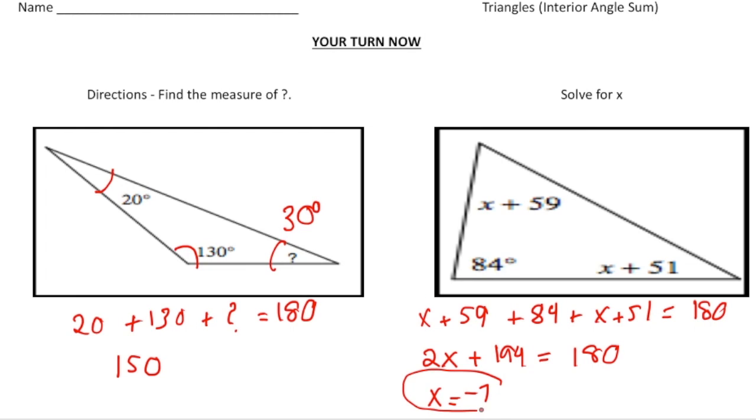Now to figure out the angle measures, let me plug in negative 7 for x. So negative 7 plus 59 gives us 52. And then negative 7 plus 51 gives us 44. And once again, if I add up 44, 84, and 52, we get a sum of 180 degrees. And again, that's what we want.